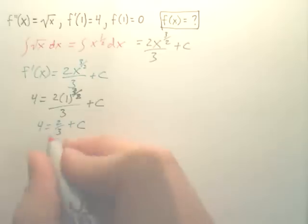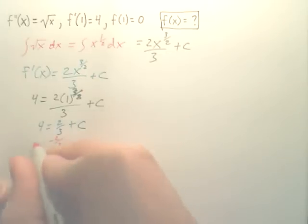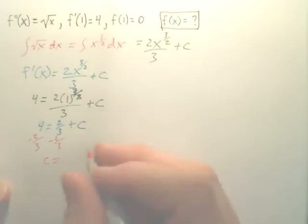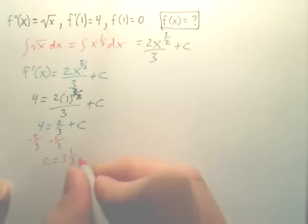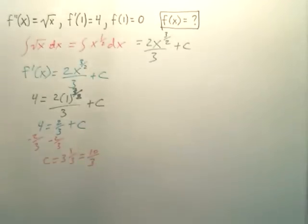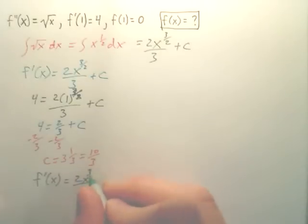We're going to minus the two-thirds over, and you get c equals three and one-third, which is ten-thirds. So f prime x is equal to two-thirds x to the three over two plus ten-thirds.